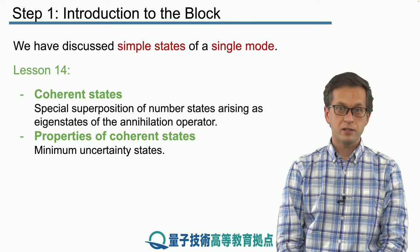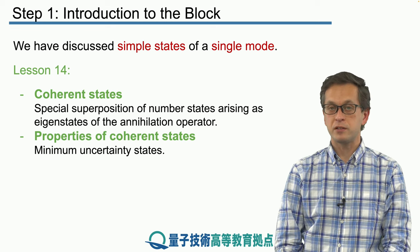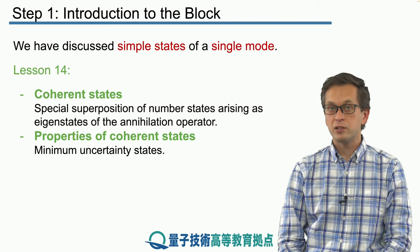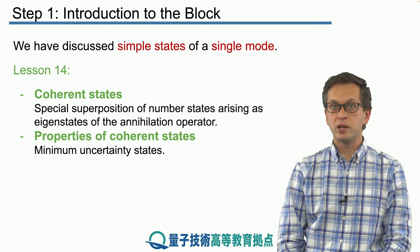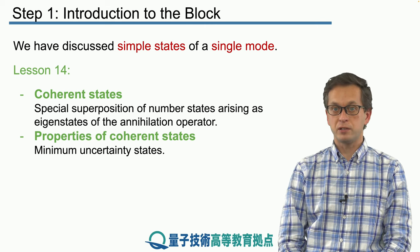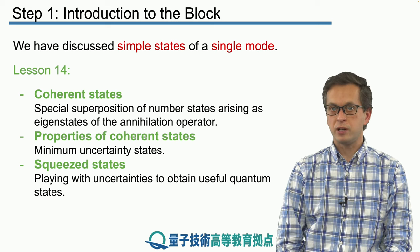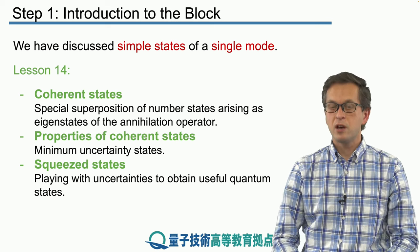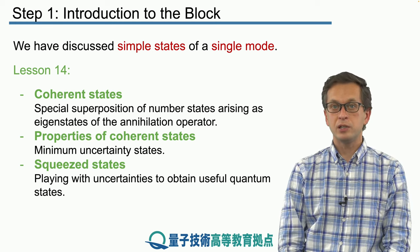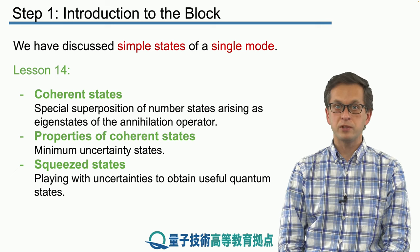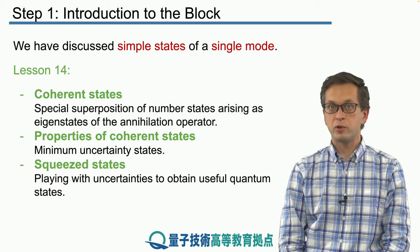We will also talk about the properties of these coherent states and in particular show that they are an example of minimum uncertainty states, meaning that their fluctuations in the position quadrature and momentum quadrature, when multiplied together, saturate the Heisenberg uncertainty relations. We will think about whether we can trick the Heisenberg uncertainty relations by squeezing one of the quadratures at the expense of expanding fluctuations in the other. This will lead us to the notion of squeeze states, which are very important not only in quantum communication but in quantum technologies and information processing in general.